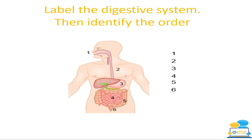On the diagram: number one is the mouth, number two is the esophagus, number three is the stomach, number four is the small intestine, number five is the large intestine, and number six is the rectum. There are many other associated organs, but you just need to label those key ones and know the basic functions of the organs of the human digestive system.